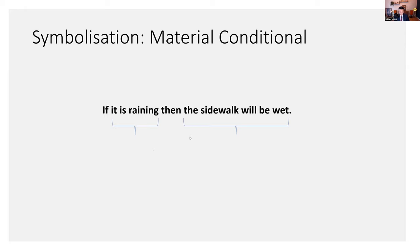The material conditional conveys something like if, then. When you see a material conditional in a sentence, that sentence can be translated as a conditional statement. In this case, we might say that it is raining is the antecedent and the sidewalk will be wet is the consequent.